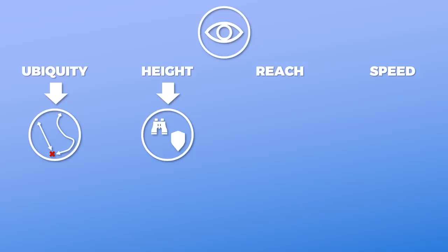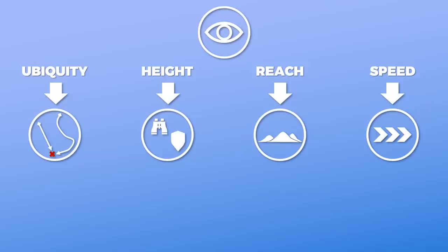For instance, certain targets like submarines are far easier to spot from the air than from a ship or land. Reach means that aircraft are not limited by most geographical obstacles while operating above land and sea. Speed means that aircraft usually reach their destination far quicker than non-airborne vehicles. Of course, there is also a negative uniqueness — namely the lack of persistence. Even with aerial refueling, the amount of time an aircraft can stay is extremely limited compared to land or sea forces.